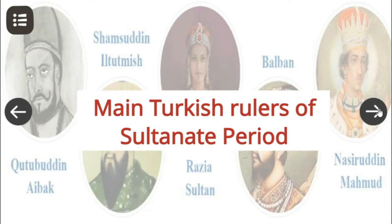In those days, there was a tradition of keeping slaves. Slaves were trained in war and administrative skills to make them efficient, and then they were given high posts in the kingdom. Qutbuddin Aibak was one of them. That is why the Sultanate period was called the Slave Dynasty and is also referred to as the Mamluk Dynasty.